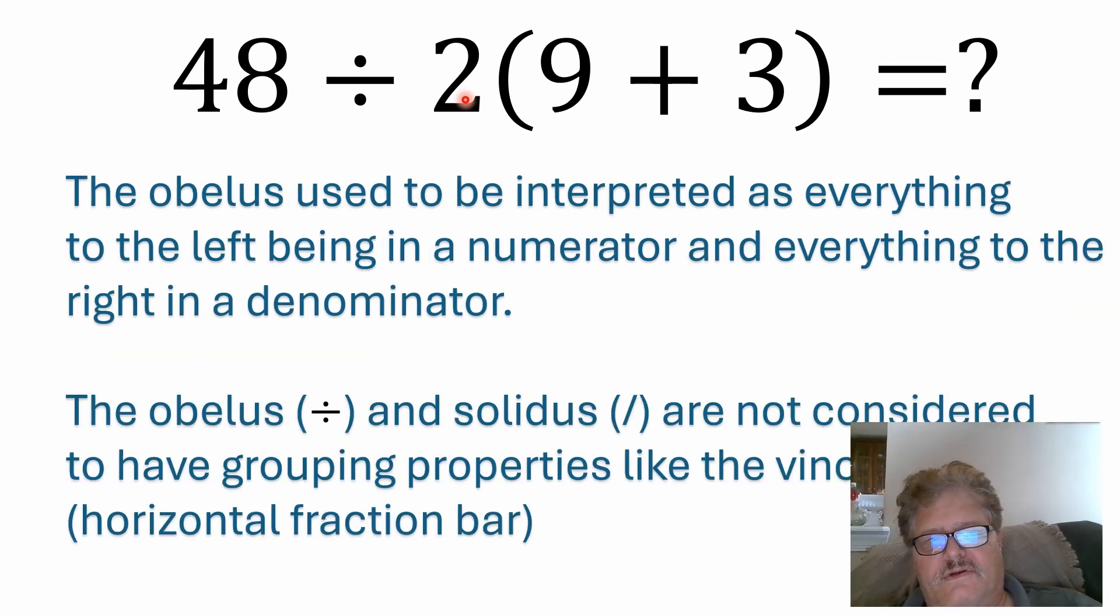Now, a second thing that we've got going on here is the use of the obelus. I hope I said that right, obelus. It's this division symbol here, the line with the two dots, one above, one below. I think it was Johann Rahn, I believe, a Swiss mathematician, that wrote the book Deutsch Algebra back in 1659. It used to be interpreted a long time ago that everything to the left would be in a numerator and everything to the right in a denominator. So it was basically acting as a grouping symbol and it would have put 48 in the numerator and then this 2 times the quantity 9 plus 3 here, that would have put all of this in a denominator. Now, it's not looked at that way anymore.